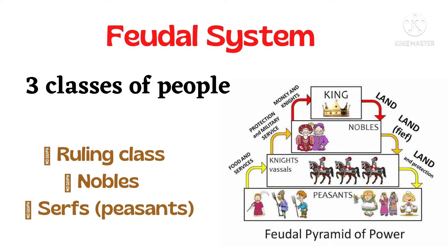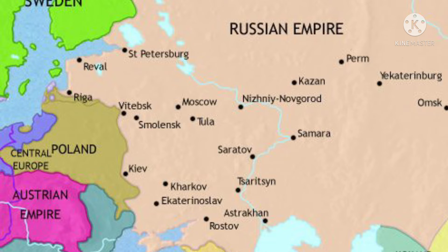The feudal system and serfdom. Three classes of people were divided in the feudal system: the ruling class, nobles, and serfs. The ruling class was the Tsar and family; nobles were landowners and knights; serfs were land workers. Problems arose as the world was changing — western culture had given up on the feudal system, Russia became more industrial, and serfs in Russia were given freedom in 1860, but workers' lives did not improve.